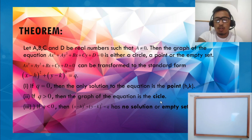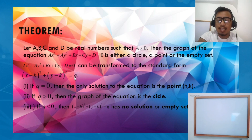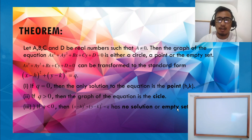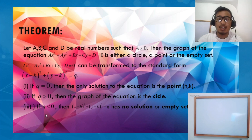It is a circle with center at (H, K) and radius R equal to the square root of Q. And if Q is less than 0, then there is no value of X and Y that can make that equation true — it is the empty set. Remember: Q = 0 means a point; Q > 0 means a circle; Q < 0 means empty set.